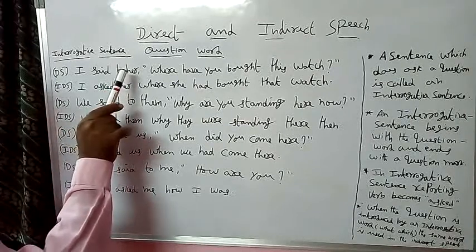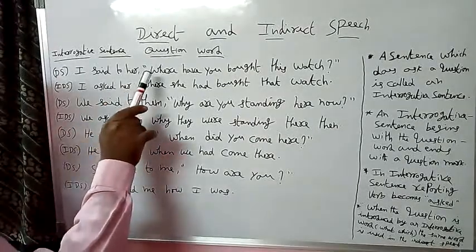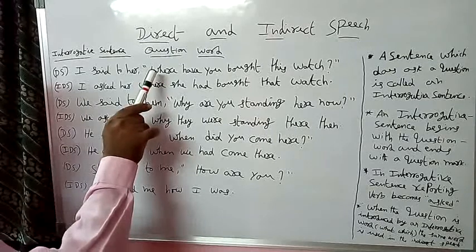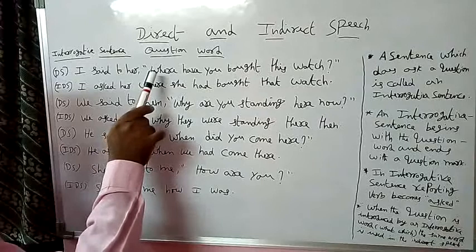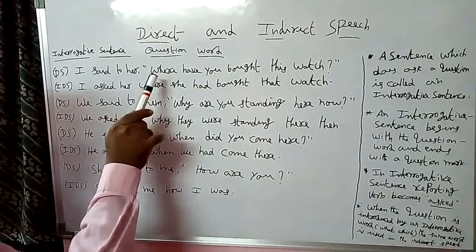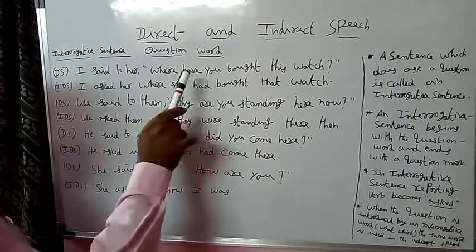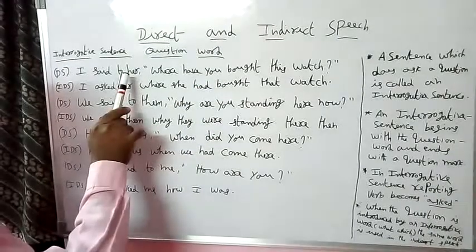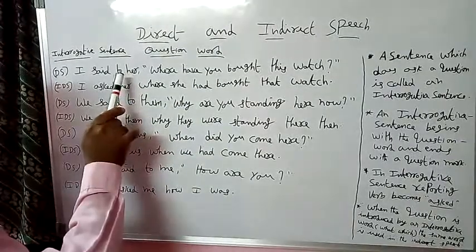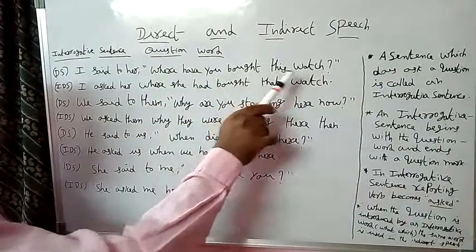The object is 'her' in direct speech, and the same object we must write in indirect speech. The question word is 'where', and the same question word is used instead of a comma in the interrogative sentence. The pronoun 'you' is changed according to the object — object is 'her', so subject becomes 'she', and 'you' is changed to 'she'. Where have you bought this watch?